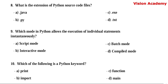Question number 8. What is the extension of Python source code? Option A: .java. Option B: .py. Option C: .exe. Option D: .txt. Here, option B — .py — is the extension of a Python source code file.